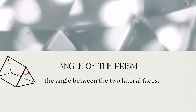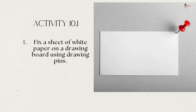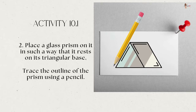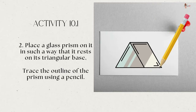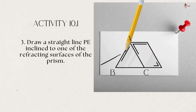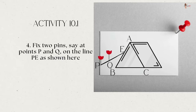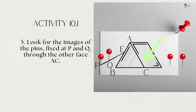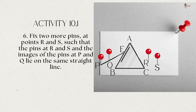Activity: Fix a sheet of white paper on a drawing board. Place a glass prism resting on its triangular base and trace its outline. Draw a straight line PE inclined to one of the refracting surfaces AB. Fix two pins at points P and Q on line PE. Look for the images of these pins through the other face AC, and fix two more pins at points R and S such that all four pins appear to lie on the same straight line.